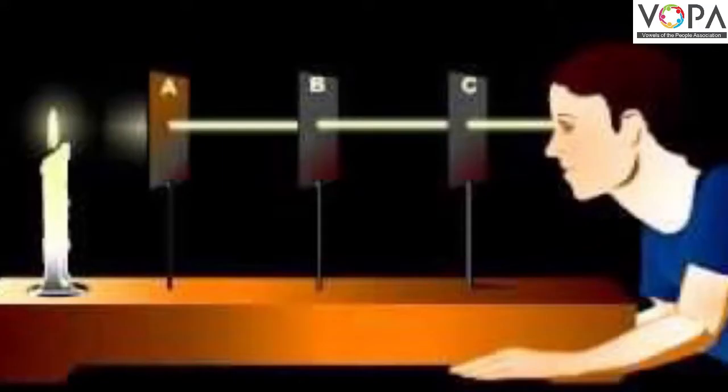Take three cardboards and make a small hole in the center of each cardboard using a thick needle. Arrange the cardboards in such a way that the three holes are in the same line, and then stand a burning candle on one side of the cardboards and look at the flame of the candle from the other side.